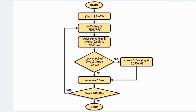This flowchart shows how FM stations are searched and stored within the commercial FM band. We begin by setting the current frequency to 88 MHz, which is the beginning of the FM band. We then write this frequency to the TEA5767 and read the signal level and stereo bit from the device. If the signal level is greater than 10 and the stereo bit is set, we store this station frequency in the EEPROM. Otherwise, we skip storing, increment the frequency, and check whether we have reached the end of the band. This loop detects and stores FM stations in EEPROM.